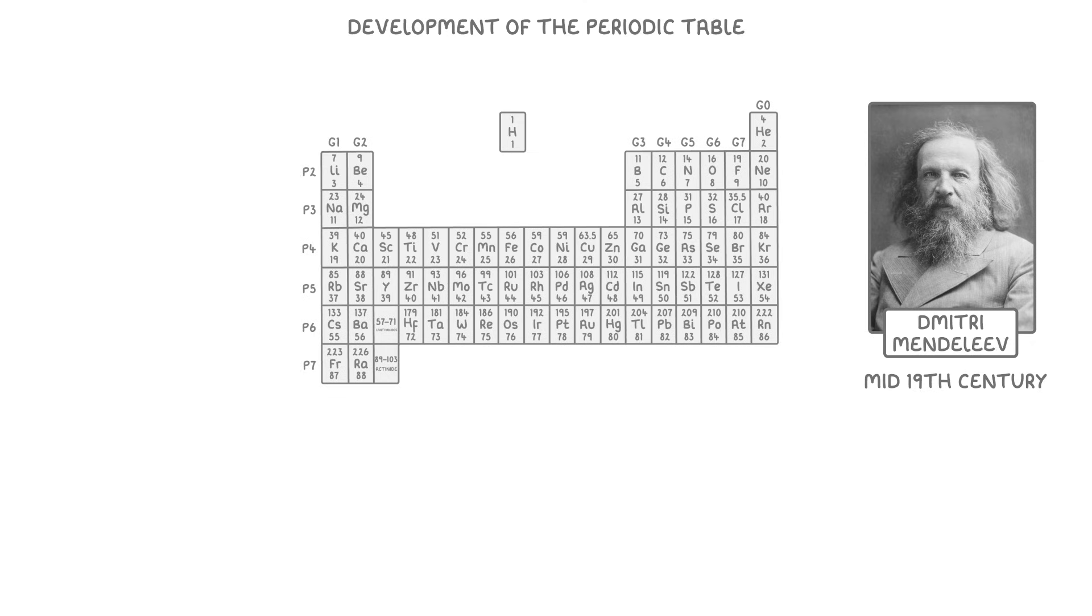Dmitry Mendeleev was a Russian chemist and inventor, and back in the mid-19th century he devised the periodic table, which organized all of the known elements. In fact when he made it, it even predicted new elements that we hadn't discovered yet.